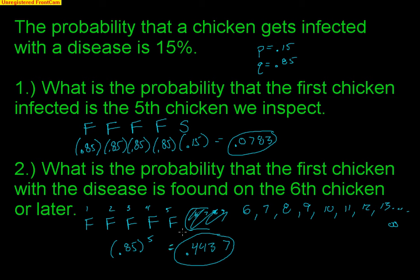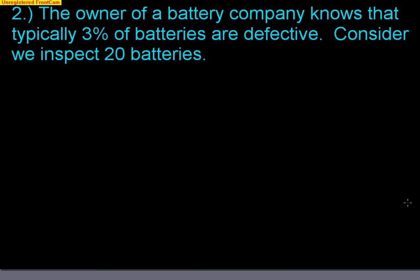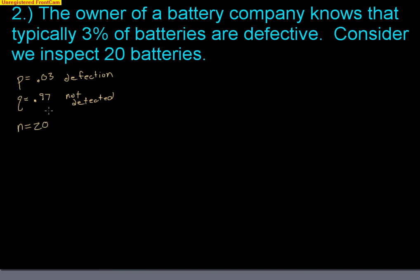All you've got to do is think yourself through: I want that sixth chicken or later to be the first one infected, so the first five have to not be infected. Now let's do one last question to introduce one last idea. The owner of a battery company knows that typically 3% of batteries are defective — consider we inspect 20 batteries. This is very binomial. The probability of success is 0.03 — that's the probability of a defect, and since that's what I'm looking for, I'm going to consider that a success. Q would be 0.97, not defective. My sample size is 20, so this is binomial.